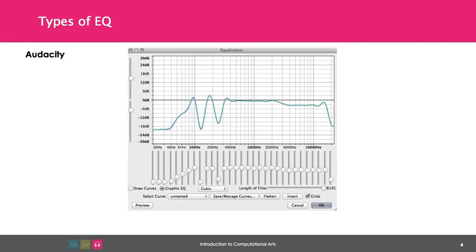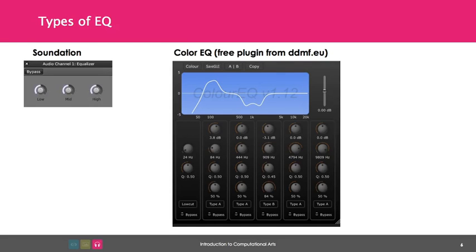Audacity has a graphic EQ built in, which you can see by going to the Equalization effect and clicking on Graphic EQ. Most software EQs are parametric. Unfortunately, Soundation does not have a good EQ, so those using Soundation can either use the EQ in Audacity or install a plugin such as Color EQ.